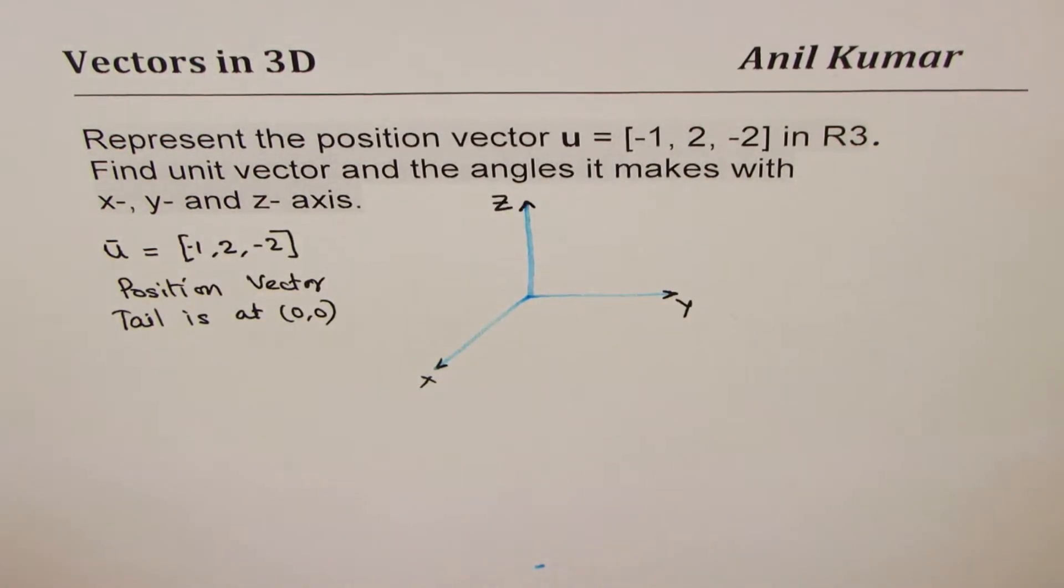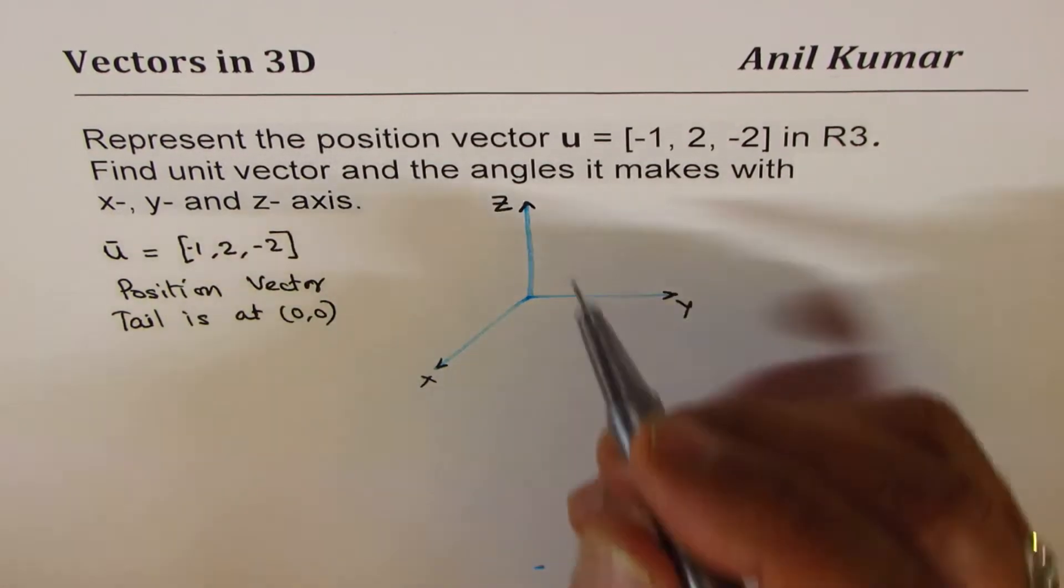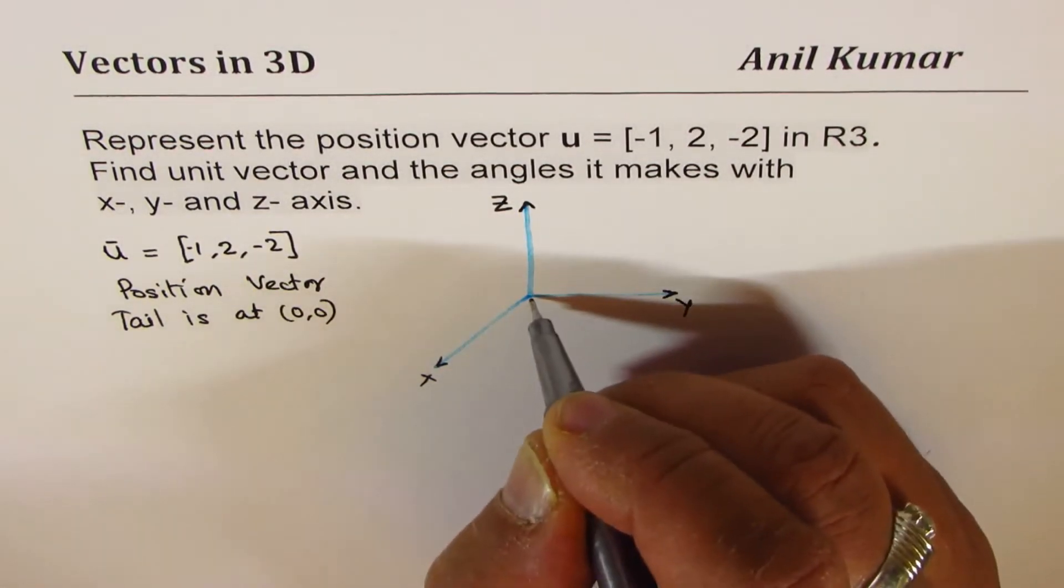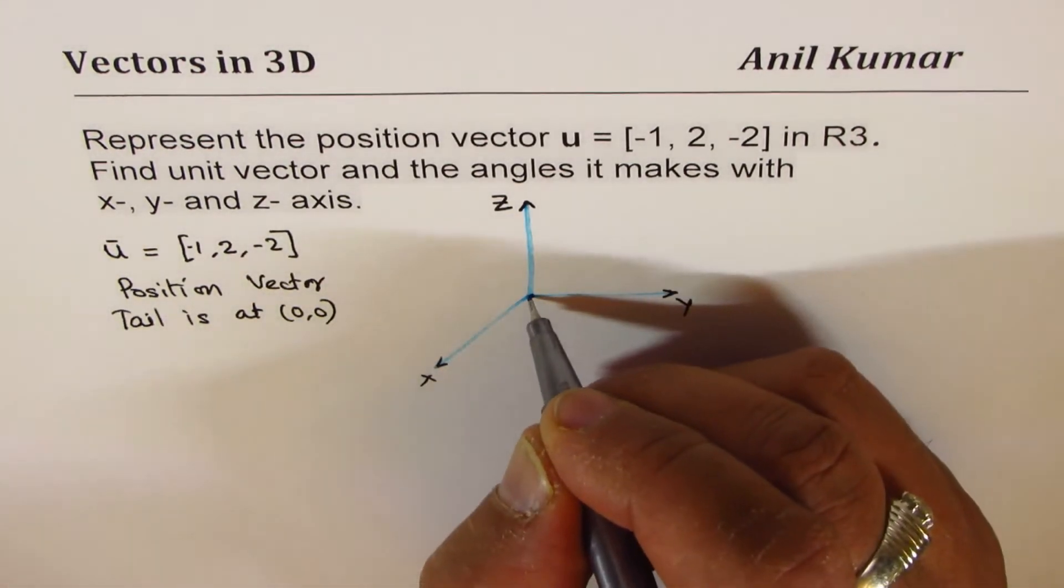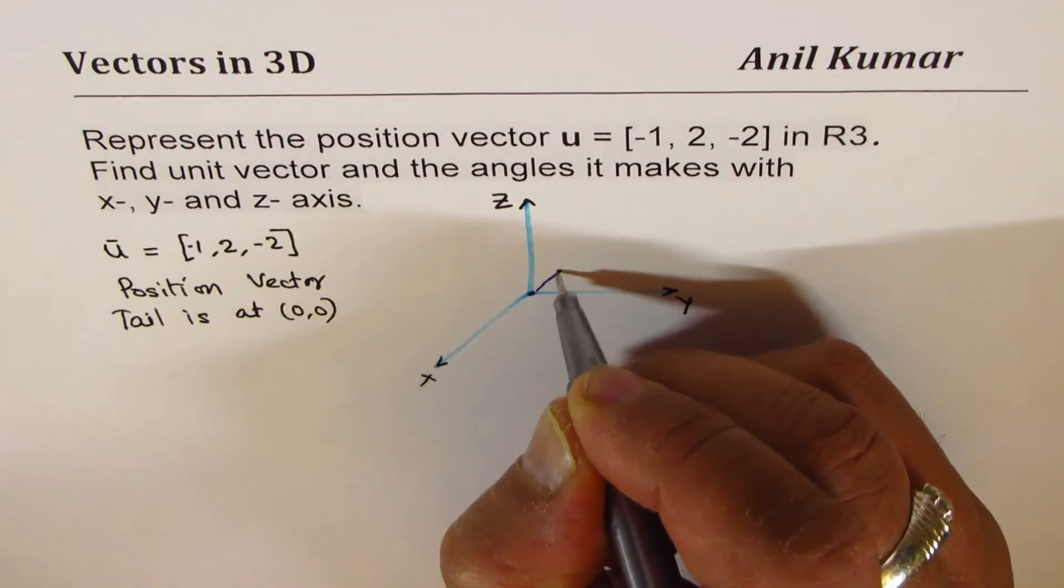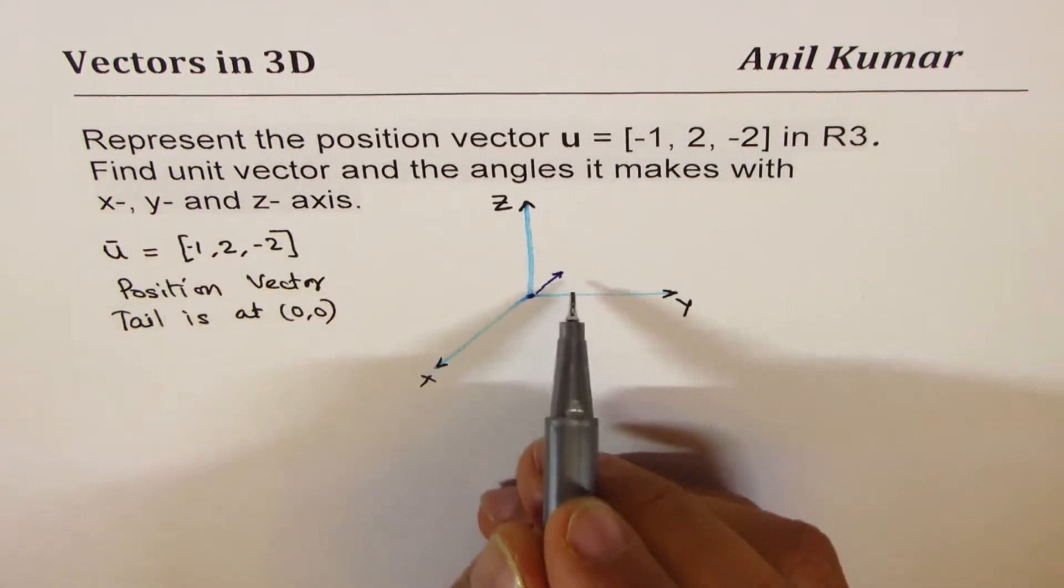When I say along x it is -1, we actually go to the other side. This is positive direction. So, from origin, the tail is at origin. We go -1. Let's say this is 1 unit. So, that is -1.